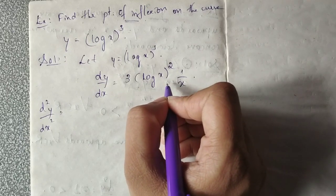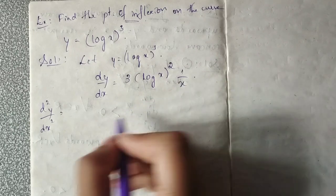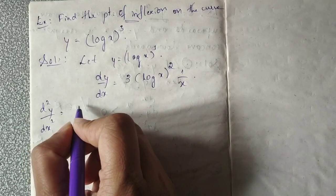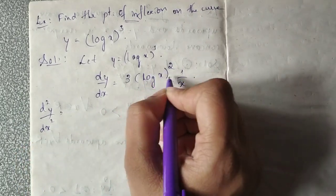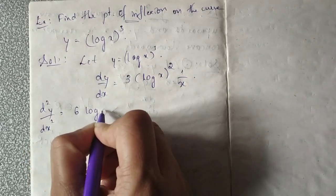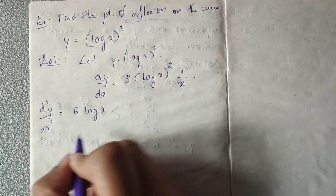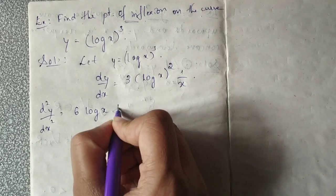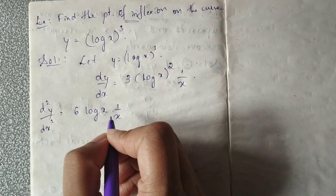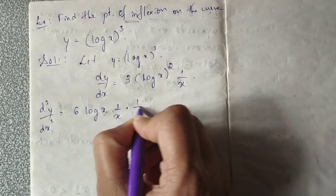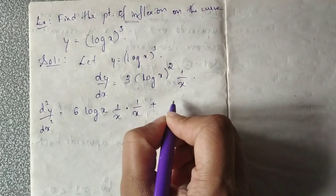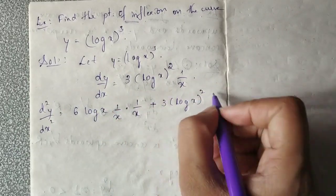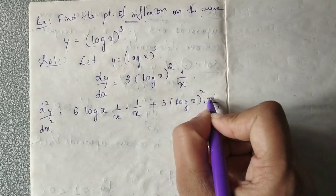We need to use the product rule to solve this. This will be 3 into 2 into log x raised to 1, times the derivative of log x — that is 1 by x — plus 3 into log x the whole square, times the derivative of 1 by x, which is minus 1 by x squared.